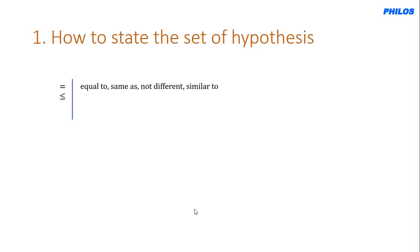The less-than-or-equal-to sign (≤) can be referred to as 'at most.' When you see 'at most five' it means less than or equal to five — five is a maximum. 'Not more than five' also means at most five. 'Five or less' is the same as 'not more than five,' 'at most five,' and 'less than or equal to five.'